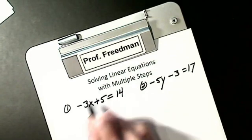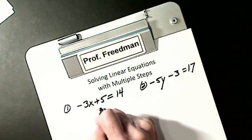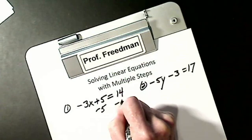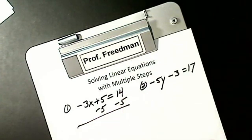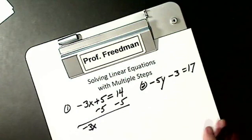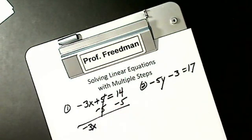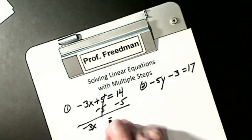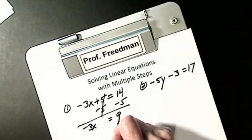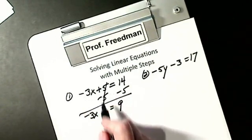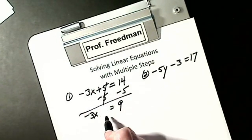This is attached by addition, so hopefully you know I'm going to subtract 5 from each side. My minus 3X stays. Plus 5 minus 5 goes to 0. I get equals positive 9. This is my new equation.